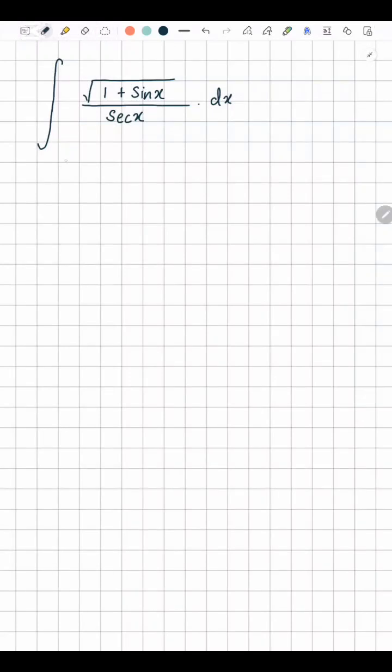Hi everyone, I'm going to show you how to do this question. What we can do is write √(1 + sin x) × (1/sec x). Now sec x is 1/cos x, so 1/sec x is cos x.